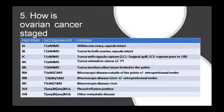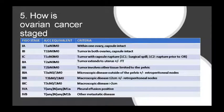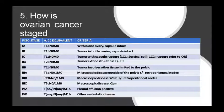Now the stages of ovarian cancer: Stage 1 involves the ovary only. Stage 2 involves other pelvic structures. Stage 3 involves intra-abdominal spread beyond the pelvis. Stage 4 involves distant metastasis. These main stages can be divided further into substages.